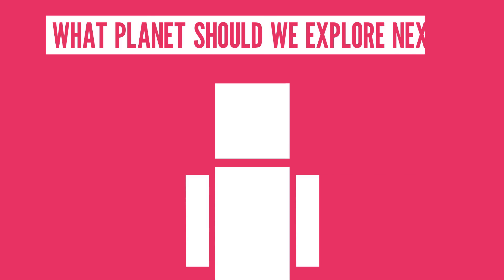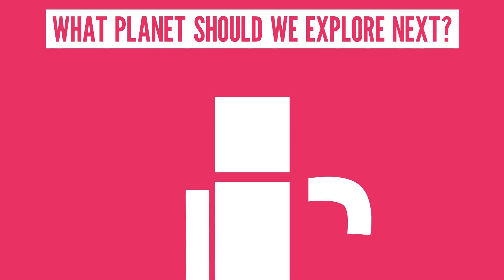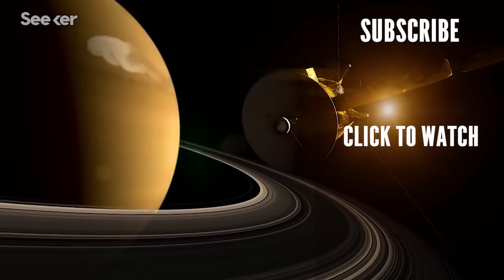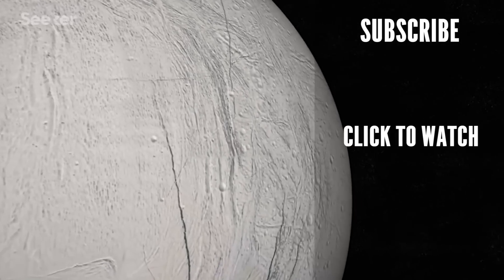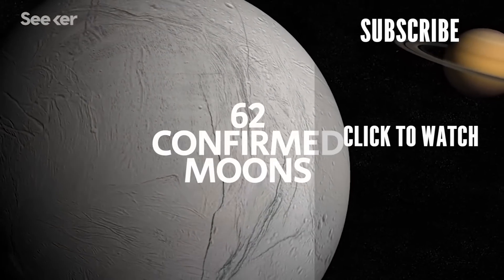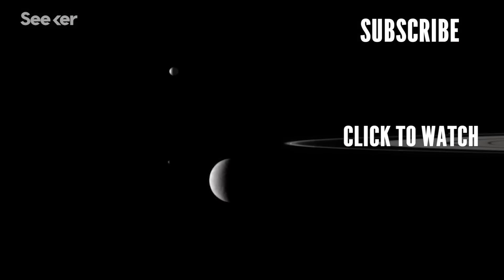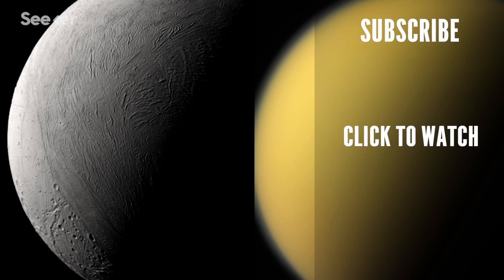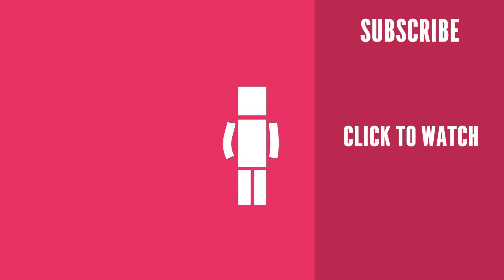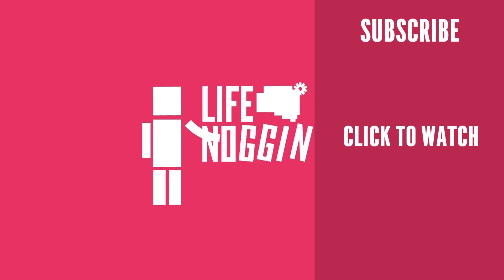So what planet should we explore next? Let us know in the comments section below. Living on Mars or Venus seems like a cool idea, but if you're curious about how you can live on a moon without a space suit, check out this video from our friends at Seeker. Saturn has 62 confirmed moons, with more being discovered all the time. And two of these moons, Titan and Enceladus, could be habitable. As always, my name is Blocko, this has been Life Noggin, don't forget to keep on thinking.